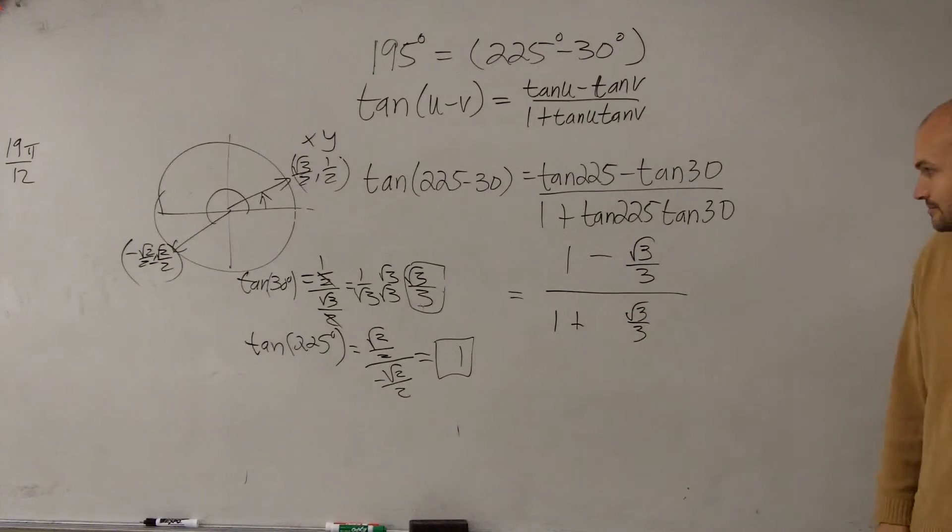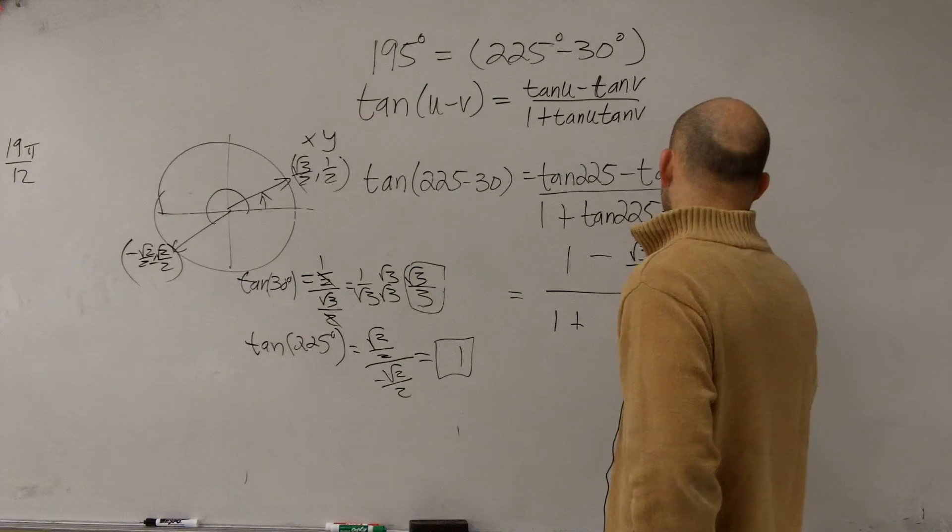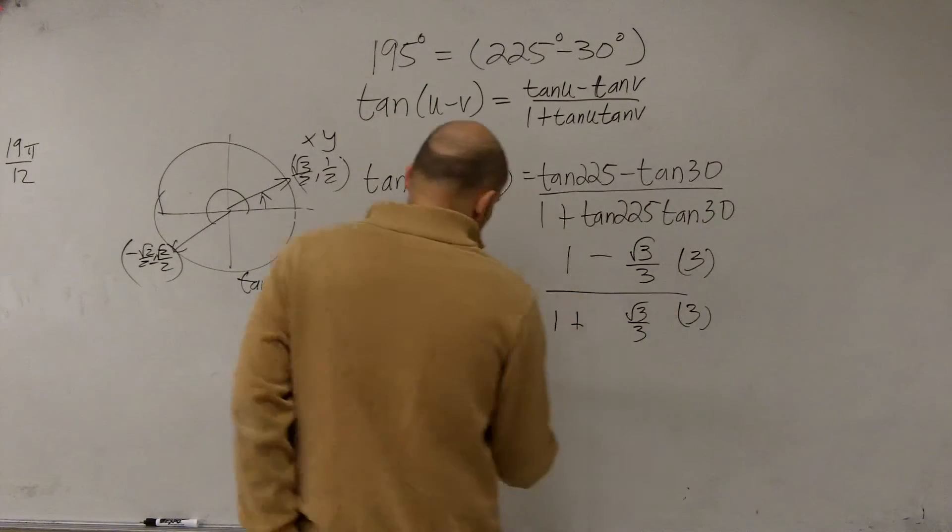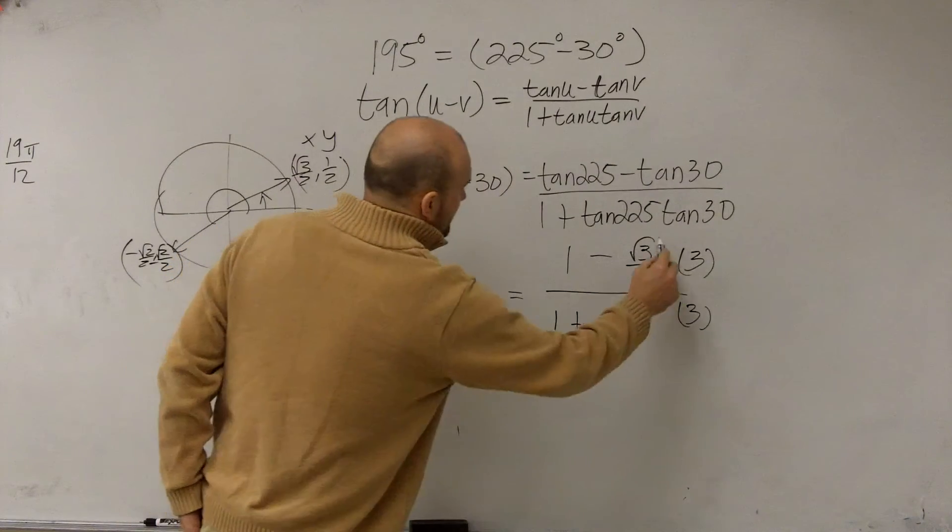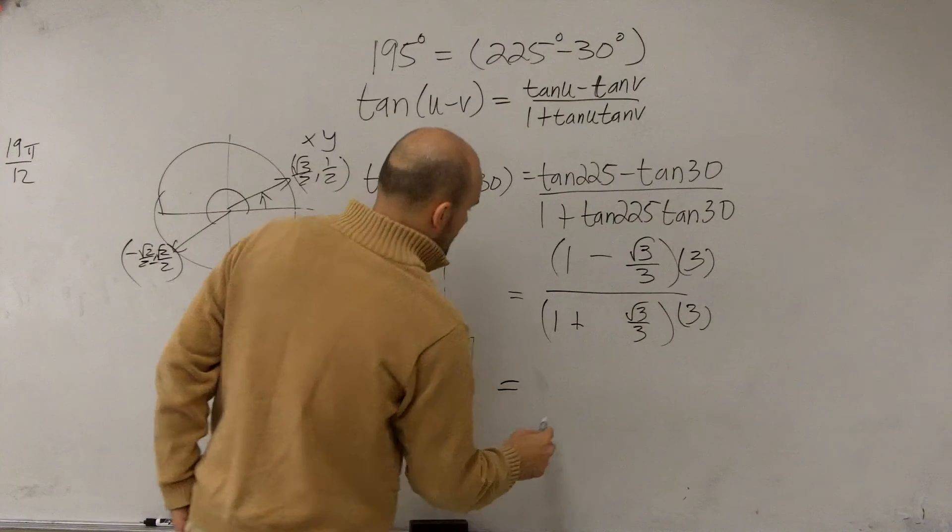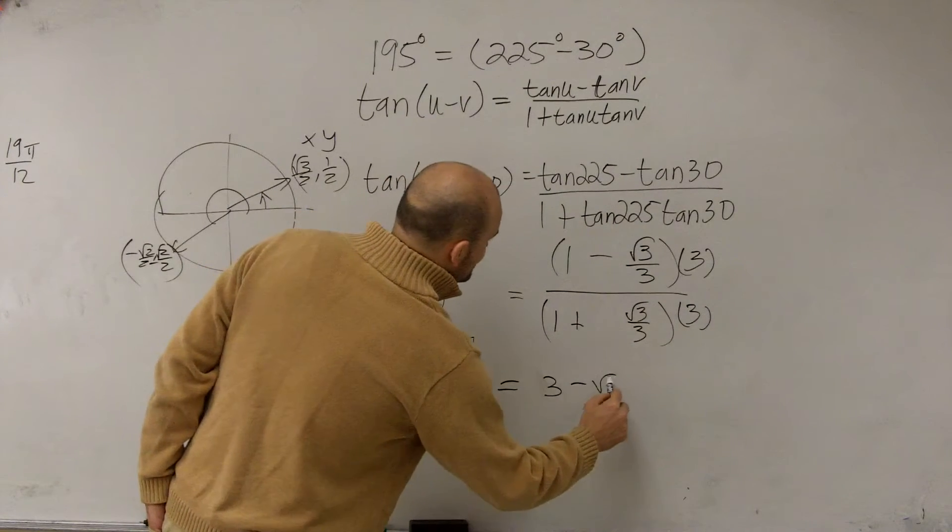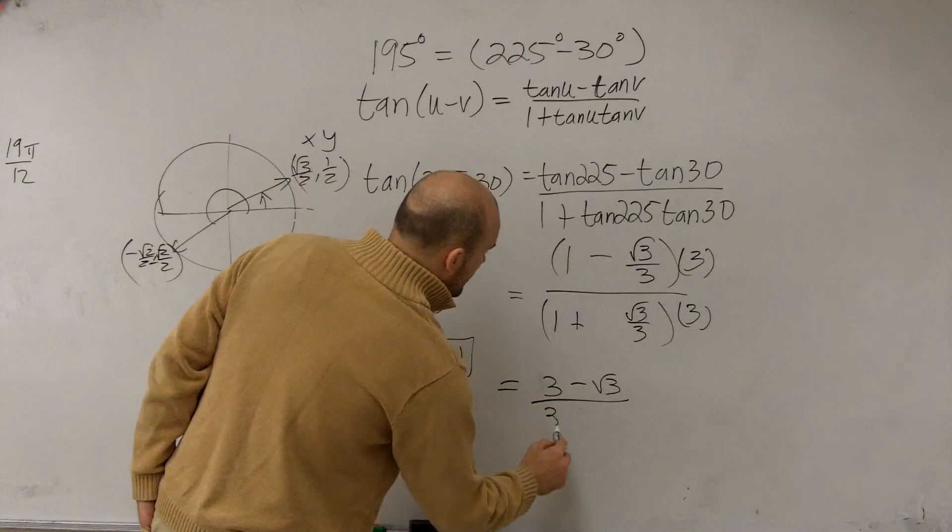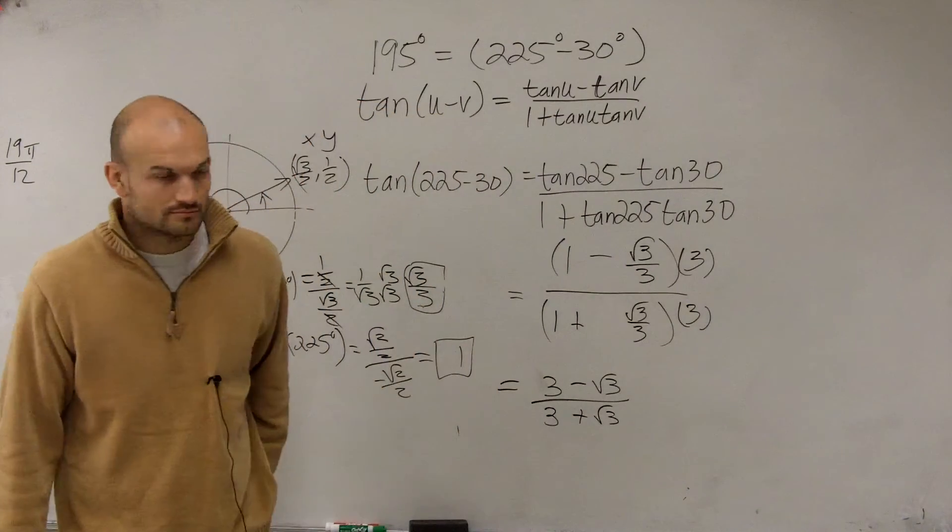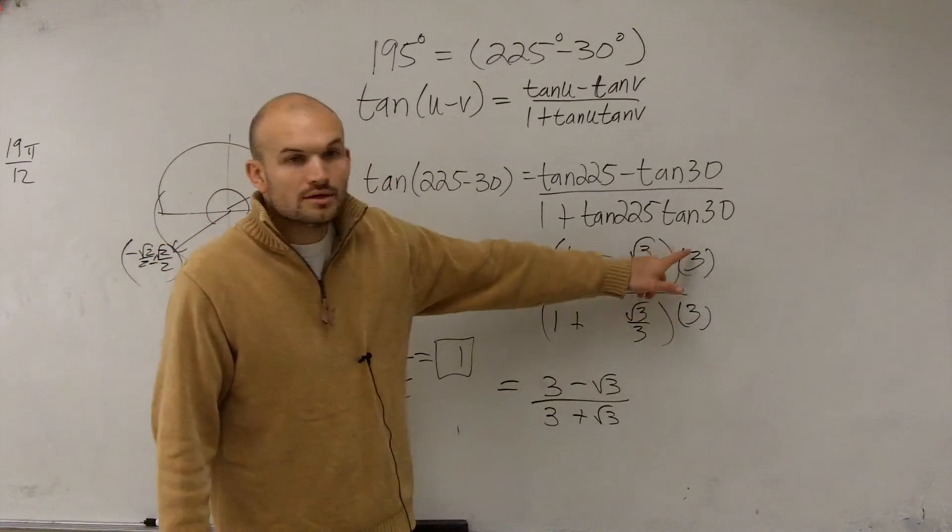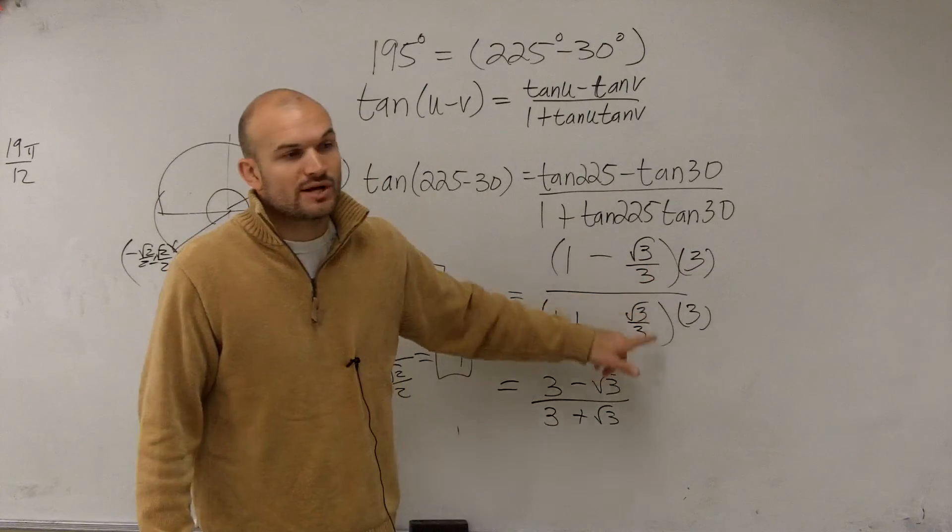Alright. So now what do I do? So now I have this answer. Well, first thing is we have a fraction in our denominator, right? So let's get rid of our fraction. So I'll multiply by 3 over 3. Now that's going to leave me with, by applying distributive property, that's going to leave me with 3 minus the square root of 3 over 3 plus the square root of 3. I multiplied both the top and bottom by 3 to get the 3 off the denominator.